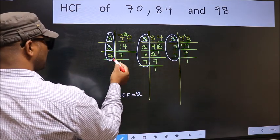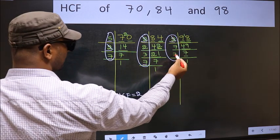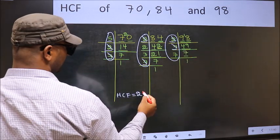Next number 7. Do we have 7 here? Yes. Go to the other place. Do we have 7 here? Yes. So cut 7 and write here.